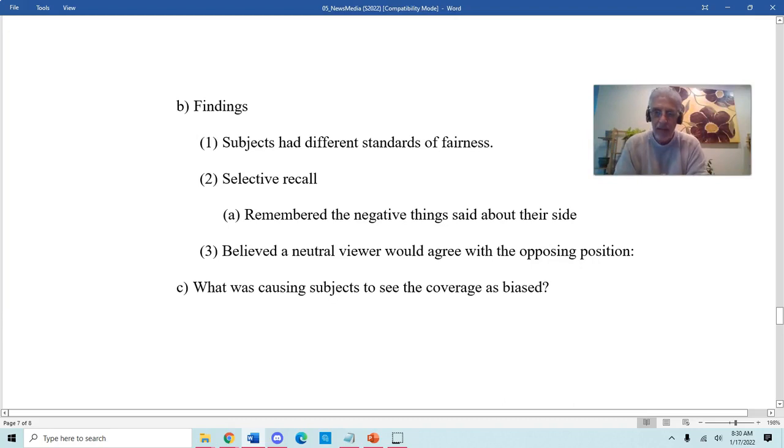And then lastly, what they found out is that they believed that somebody who was neutral, somebody who didn't have strong opinion about this conflict or about what happened in Beirut, that they believed that somebody who was neutral would agree with the other side. The Palestinians thought that if somebody didn't have strong views on what happened with the Beirut massacre and the conflict in the Middle East, they would wind up supporting the Israelis or be more likely to support the Israelis when they were done with this experiment. And likewise, the Israelis thought that if somebody didn't have strong views on it, the pro-Israeli students, I should say, thought that if somebody didn't have strong views on this conflict, when they were done, they would be more likely to support the Palestinian side.